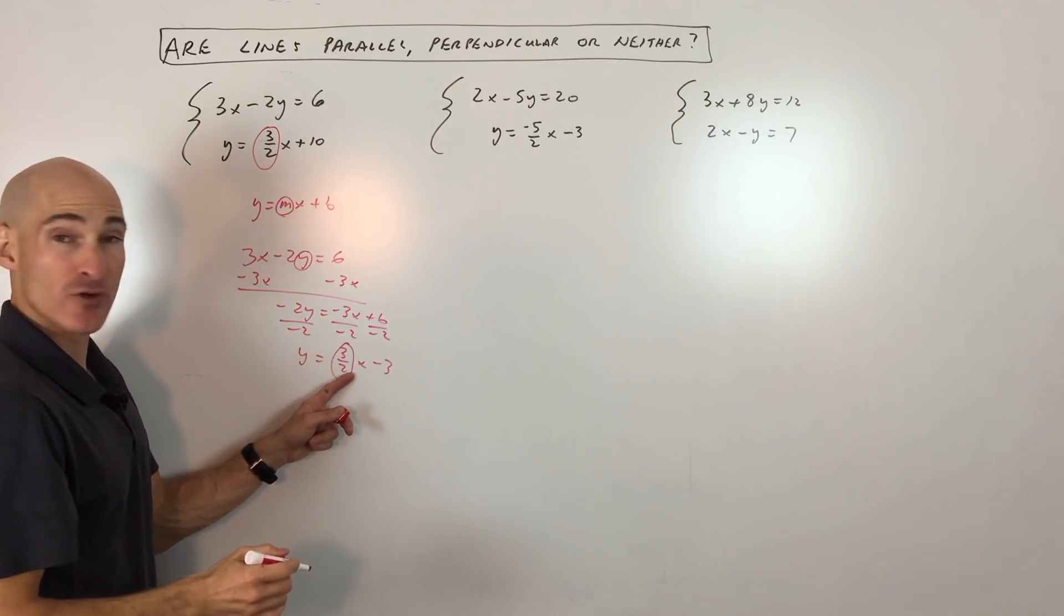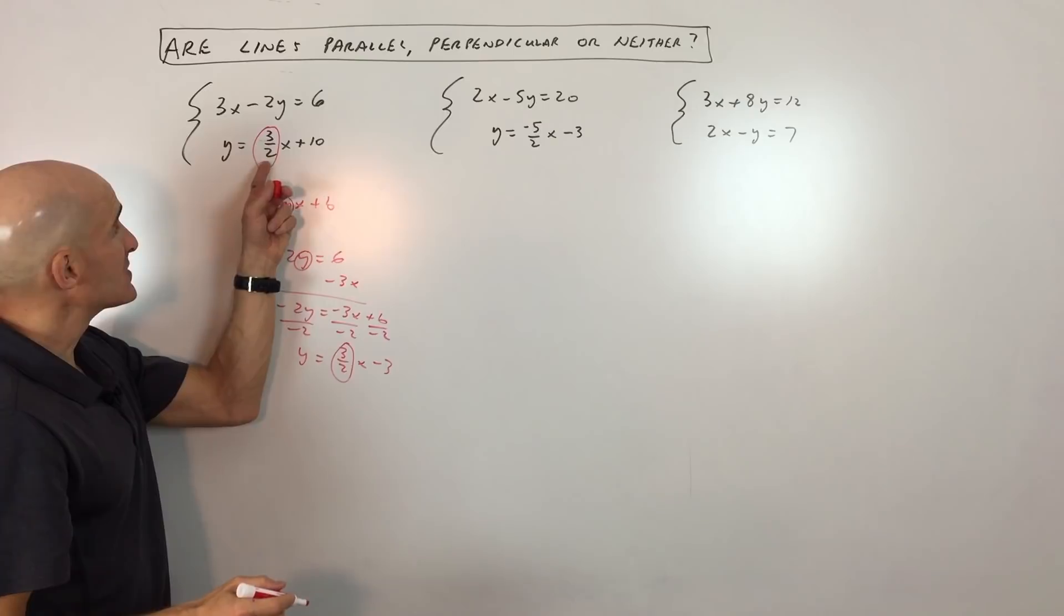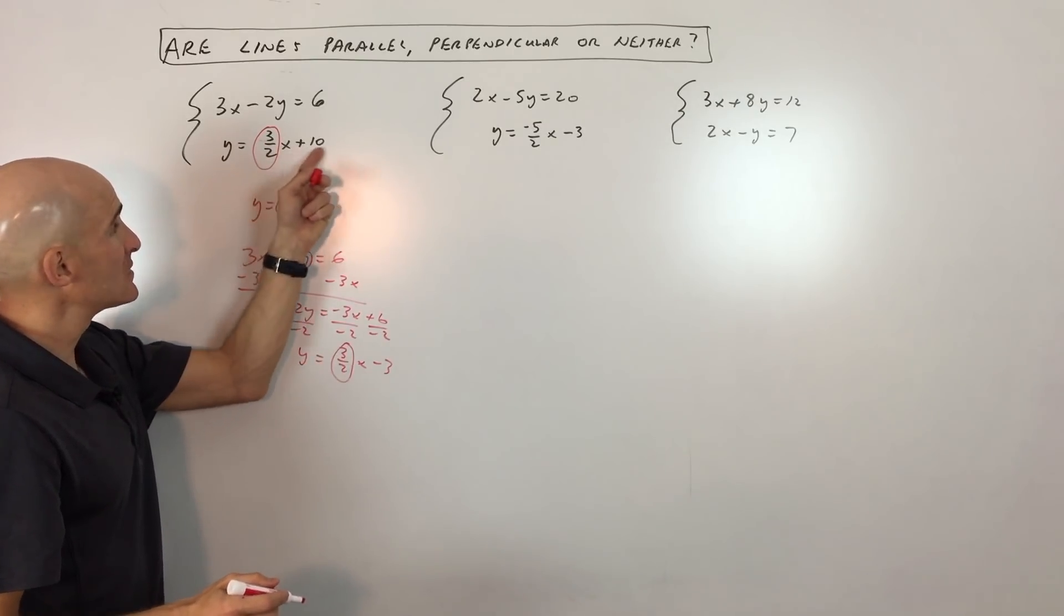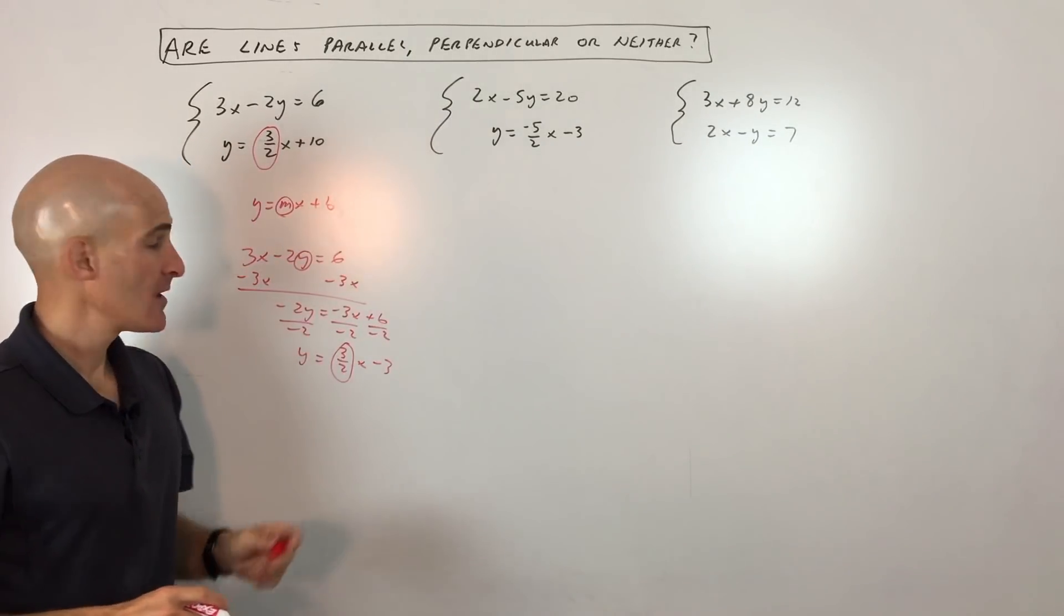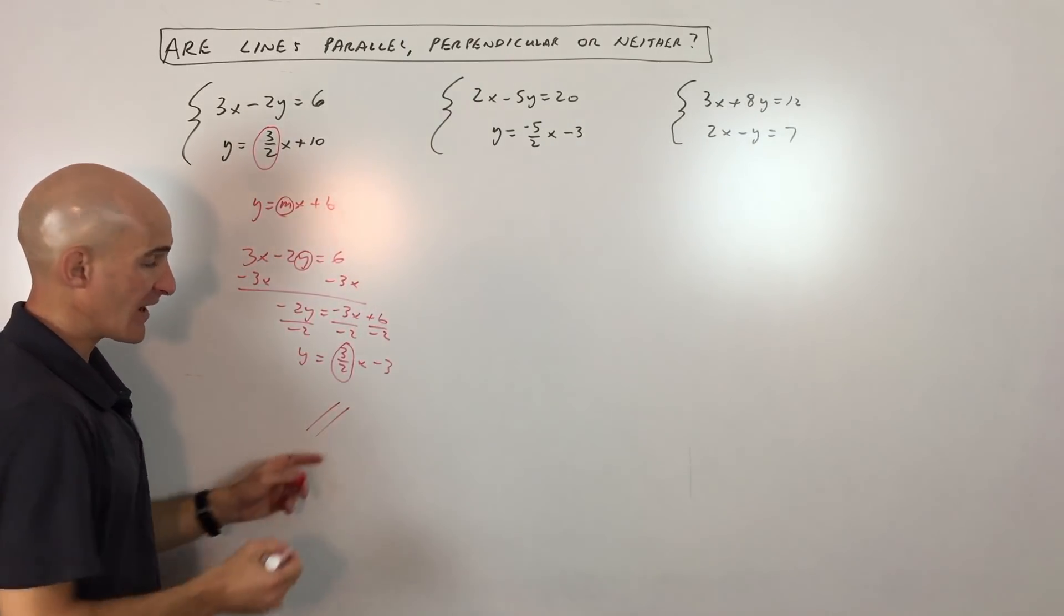So that number to the left or in front of the x is the slope. You can see these have the same slope, different y-intercepts. So they're going to be going up at the same rate, and they're not going to cross. So these are going to be parallel lines.